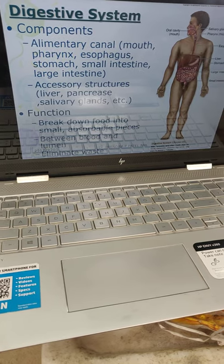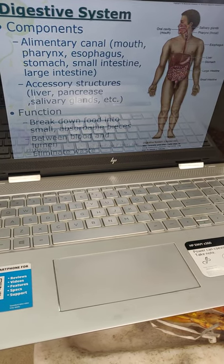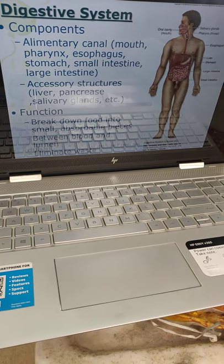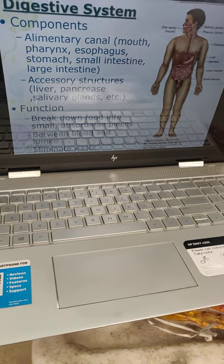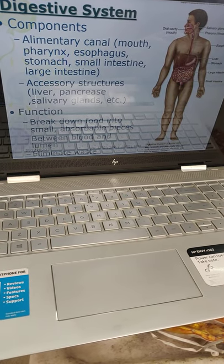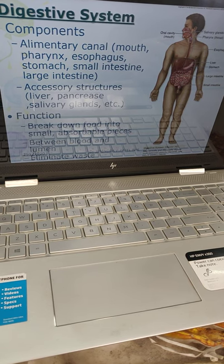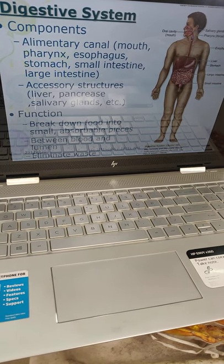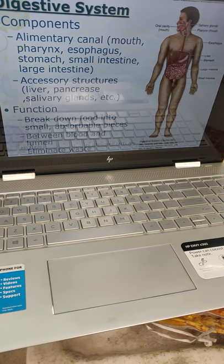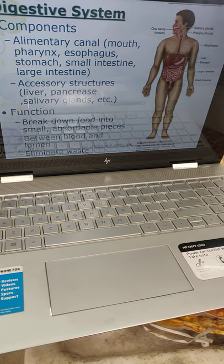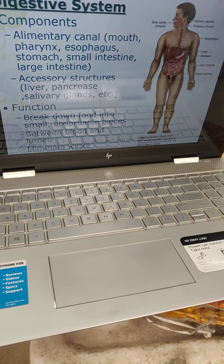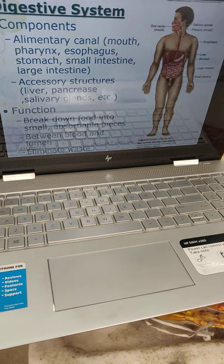The digestive system — it contains the alimentary canal: mouth, pharynx, esophagus, stomach, small intestine, large intestine; as well as accessory structures: liver, pancreas, salivary glands, and also spleen. Function: it is the breakdown of food into small absorbable pieces, nutrients are absorbed between the blood and the lumen, and it also eliminates waste products by stool.